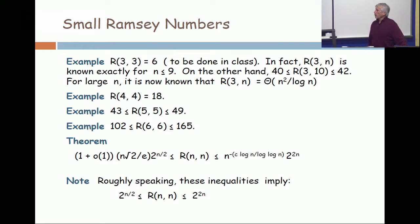The number R(4,4) is known exactly as 18. R(5,5) is not known exactly. It's known to be in the range 43 to 49. The gap on R(6,6) is somewhere between 102 and 165.